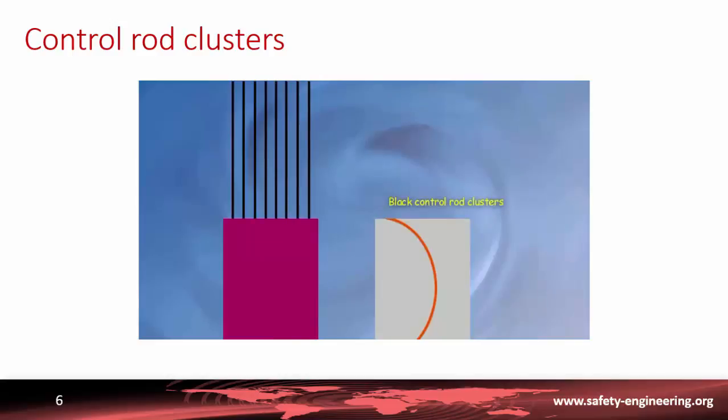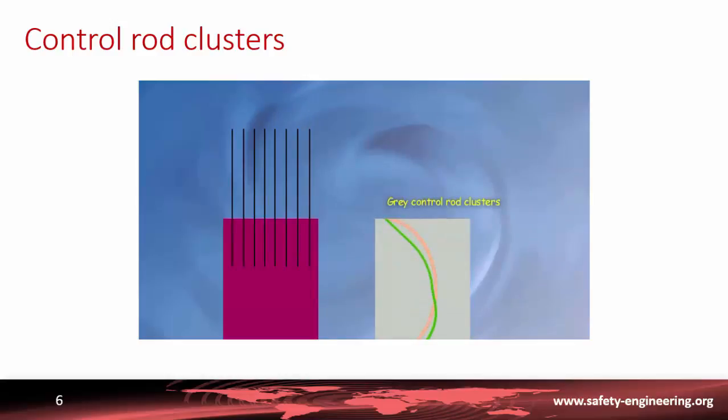For instance, if the highly absorbent black control rod clusters are introduced, less heat is produced in the upper part and more in the lower part with a substantial risk of local overheating at a constant overall heat output. If on the other hand the grey control rod clusters are introduced, the effect is far more diffuse and therefore acceptable. But the ideal approach is to vary the boron concentration in the water as neutron absorption is then uniform and there are no disturbances in the core.